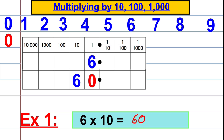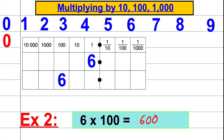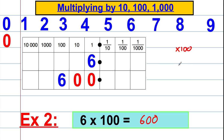Now we're doing 6 multiplied by 100. Students would know that's 600. Let's see what's going on with place value. We had 6 ones. To get 600, we moved the 6 two spaces to the left, so it's 6 hundreds. We put two place value zero holders in to show we have no tens and no ones. So the answer is 600. When we multiplied by 10, we shifted left by one space. When we multiplied by 100, we shifted the digits left by two spaces.